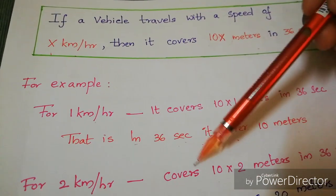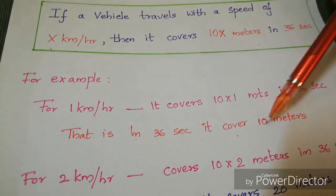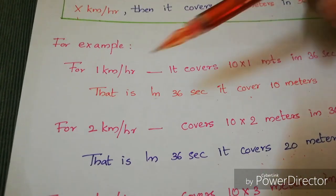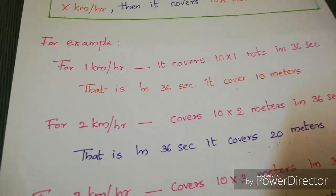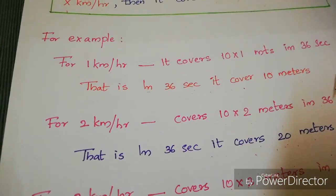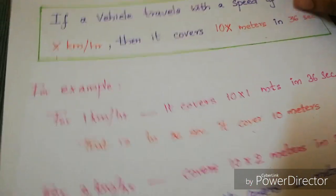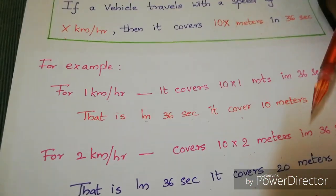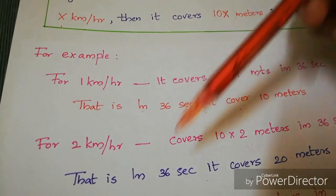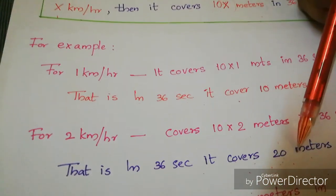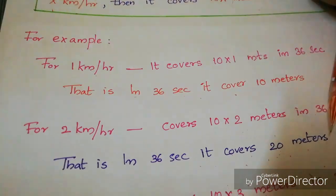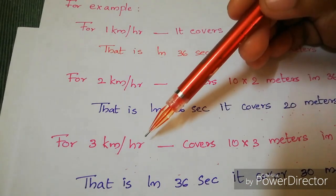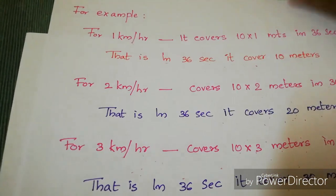So in 36 seconds it covers 10 meters. Similarly, for 2 kilometers per hour, the x value is 2, so it covers 10 × 2 = 20 meters in 36 seconds. For 3 kilometers per hour it covers 30 meters, and so on.